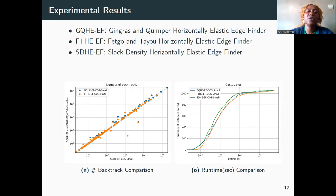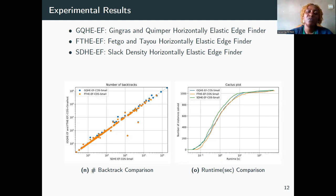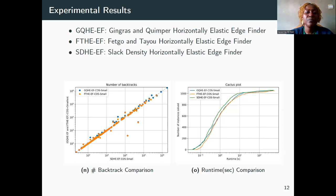Comparisons using the second dynamic heuristic, conflict ordering search plus smallest, show according to Figure N that Slack Density performs better in many instances than Fetbo and Tayou and Gingras and Kimper. The conflict ordering search plus smallest heuristic appears to be a good dynamic heuristic for the new algorithm because it branches on variables whose domain has been modified. The running time gain between Slack Density and the two other configurations is more prominent, as illustrated in Figure O.